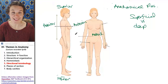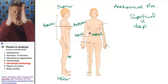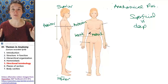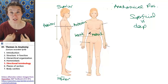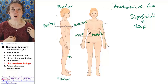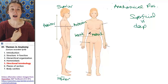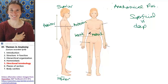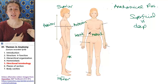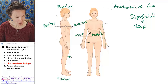Medial and lateral refer to the midline. Things that are closer to the midline are medial; things that are farther away from the midline are lateral. So my sternum is medial to my shoulder. My sternum is almost always medial because it's right on the midline. The pectoralis major is lateral to my sternum, but it is medial to my shoulder. Again, relative terms.